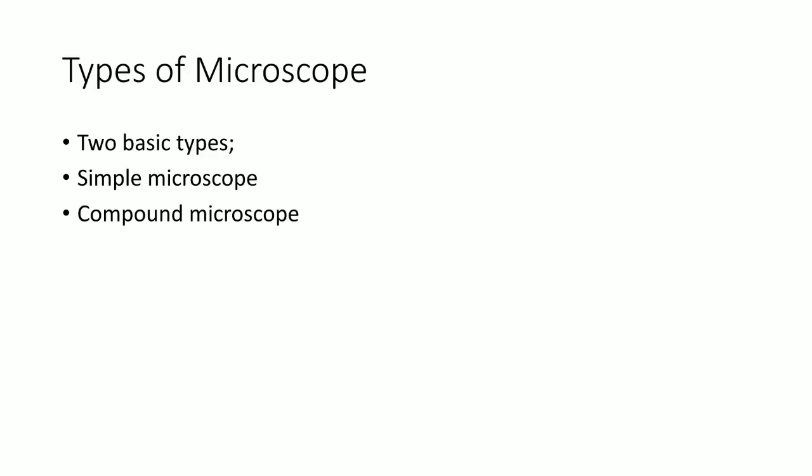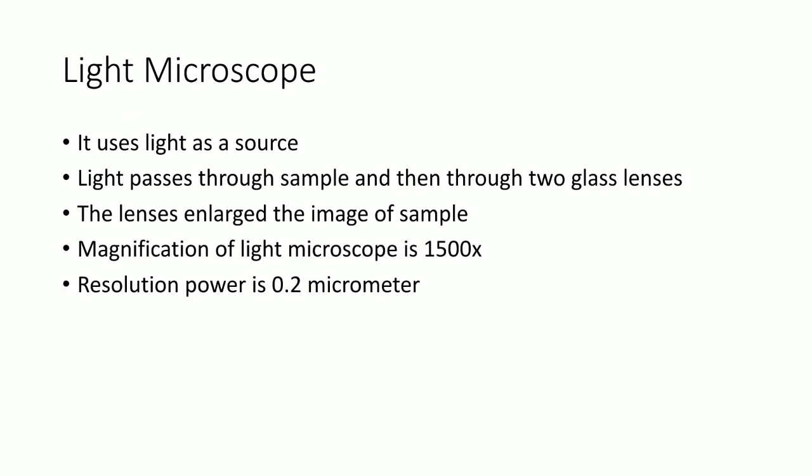There are basically two types of microscope: a simple microscope and a compound microscope. A simple microscope uses a single lens — for example, a magnifying glass has only a single lens. A compound microscope uses more than one lens, such as the light and electron microscope which use several lenses. At least two lenses are used in the compound microscope.